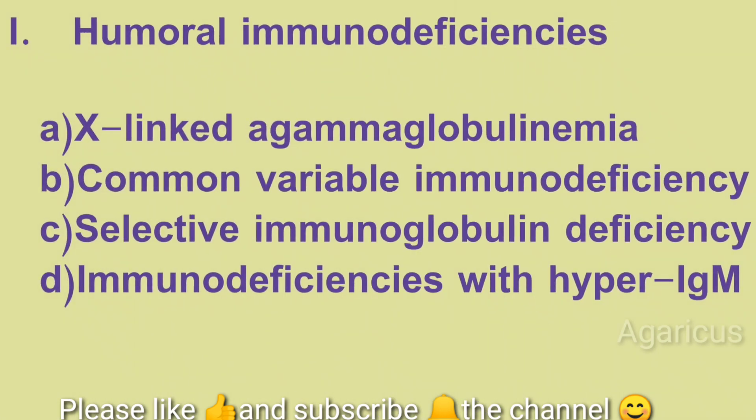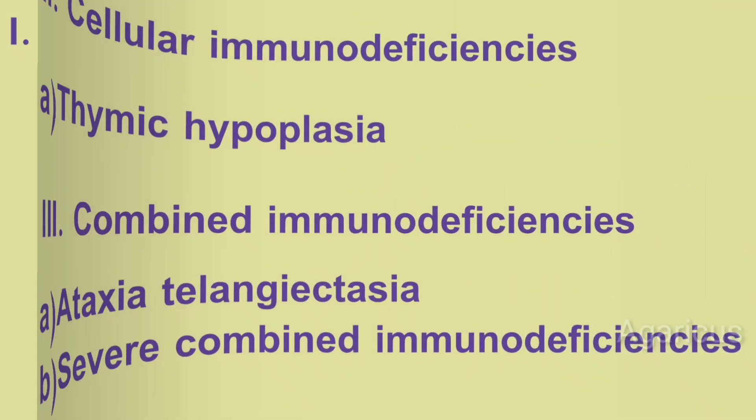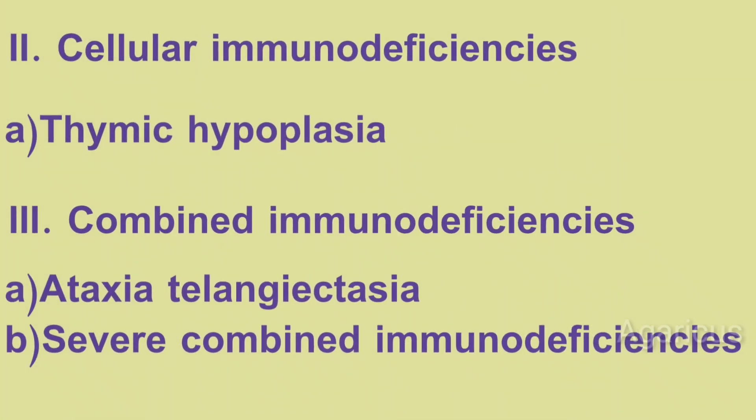Examples of humoral immune deficiency include X-linked Agammaglobulinemia, Common Variable Immune Deficiency, Selective Immunoglobulin Deficiency, and Immune Deficiency with Hyper Immunoglobulin M. Examples of cellular immune deficiency include Thymic Hypoplasia. Combined immune deficiencies include Ataxia Telangiectasia and Severe Combined Immune Deficiencies.